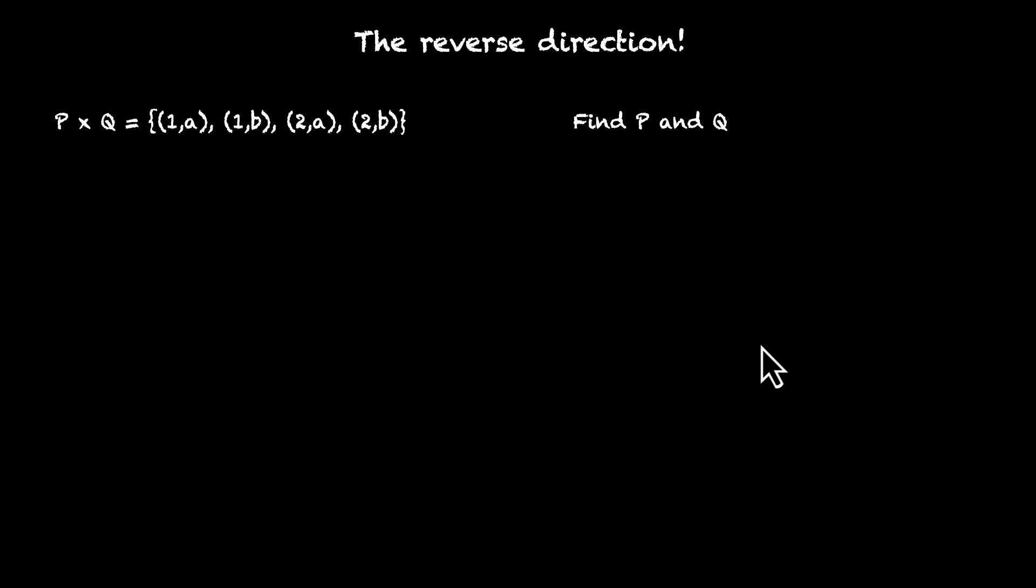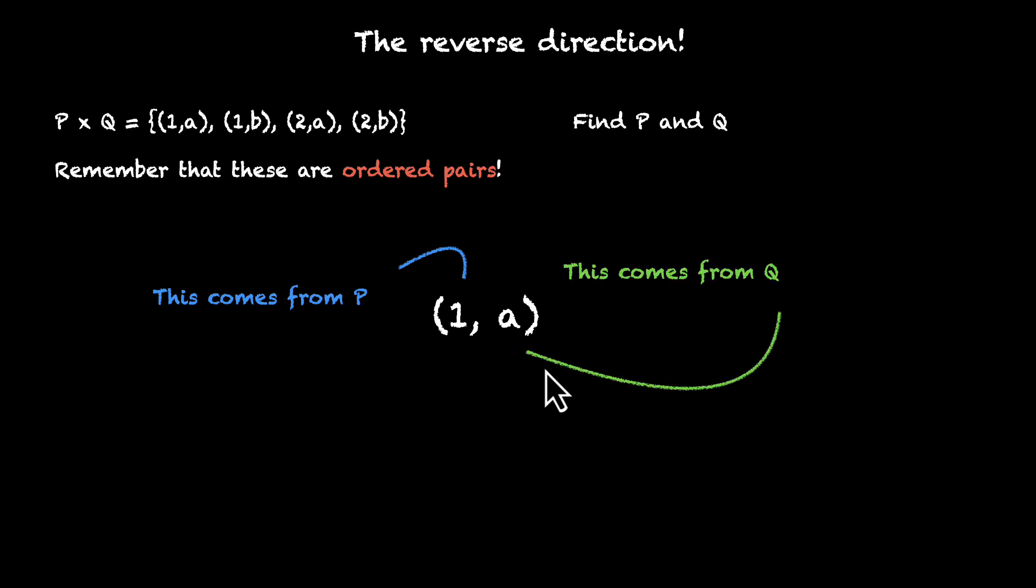Okay, so the key thing to note here is the Cartesian products are the sets of ordered pairs of elements of P and Q. The order is important. Always remember that these are ordered pairs. Any element that you pick from P times Q, this is an ordered pair. The first element of it is coming from P and the second element of it is definitely coming from Q. This order will not change. This is something that we'll use to figure out what P and Q are.